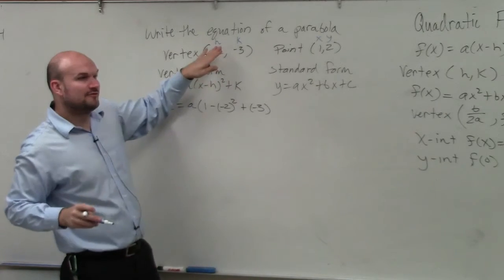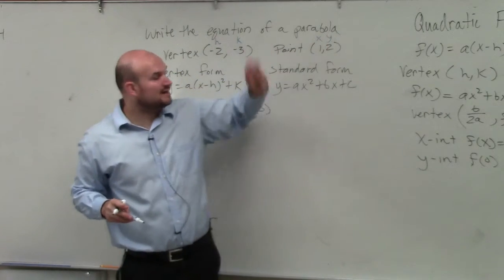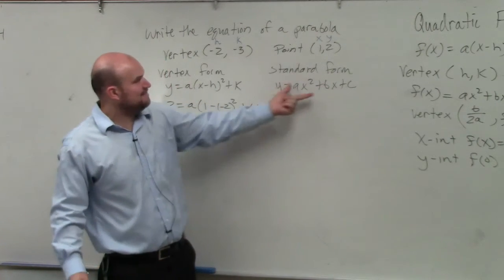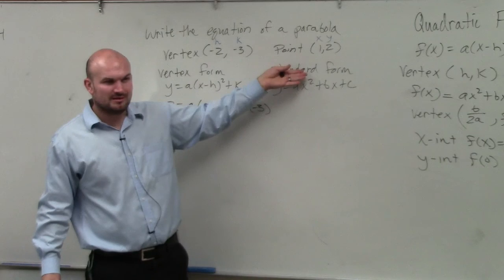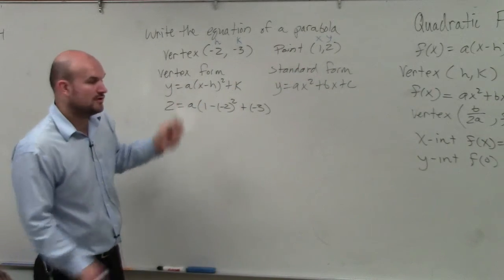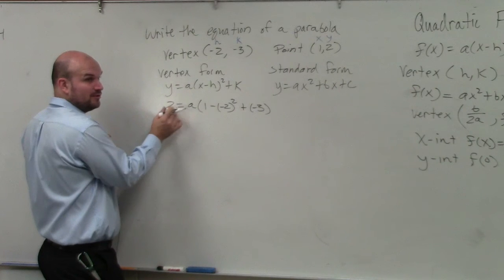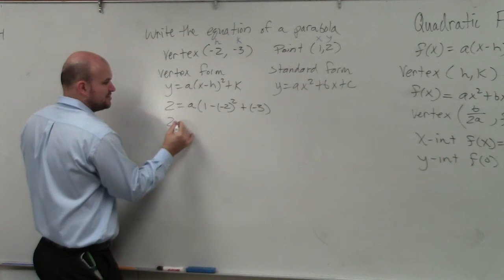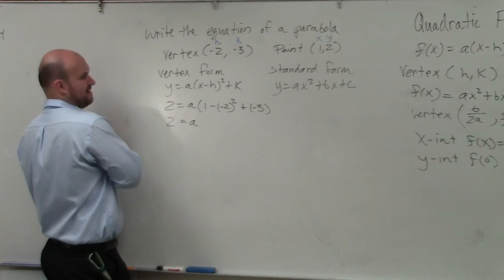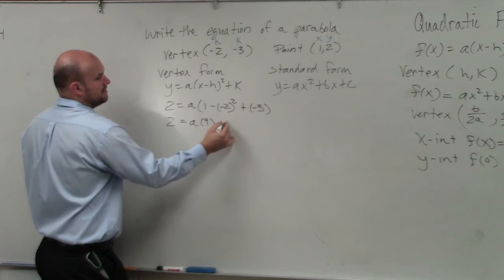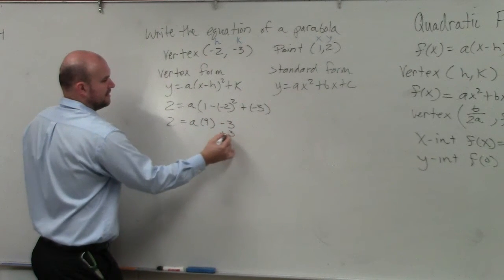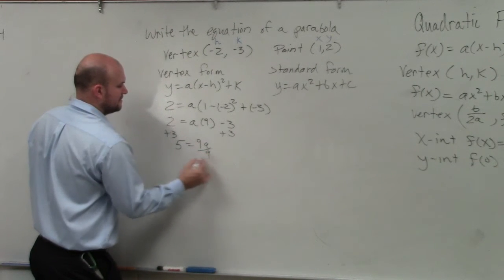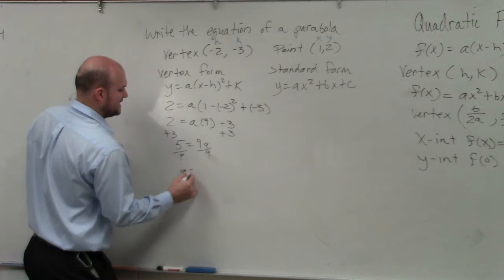All I did was plug in h, k, x, and y. So even though this is a form of a quadratic, standard form isn't going to help us because we don't know what a, b, or c is. So we use vertex form. Now we have one equation and one variable, so we just simplify: 2 equals a times 1 minus negative 2, which is 3, squared, minus 3. That's 2 equals 9a minus 3. Add 3 to both sides: 5 equals 9a. Divide by 9: a equals 5 ninths.